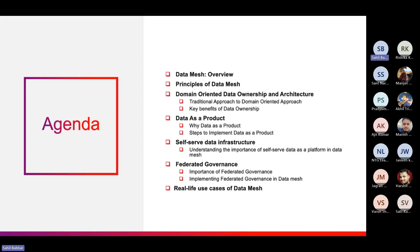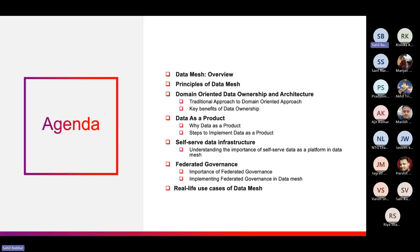So let us see the agenda for today's session. First we are going to have a quick overview of data mesh — what is data mesh, why it is important, and how it benefits modern business success. Next we will see the four principles of data mesh. The first one is domain-oriented data ownership and architecture, in which we will see the journey from the traditional approach to the domain-oriented approach, why the traditional approach was not viable, and why we need to switch. We will also see some key benefits of data ownership.